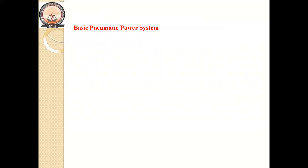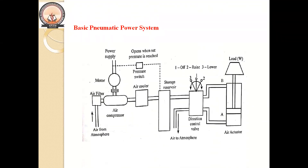Next, let us study the components of the pneumatic power system. You can see the diagram here. The major components are: air filter, air compressor, air cooler, storage device, controlling valve, and actuator. Air filters suck air from the atmosphere, remove unwanted particles, and send the pure air to the air compressor. The air compressor is run by a motor; in the compressor the air gets compressed, and during the process both pressure and temperature increase.